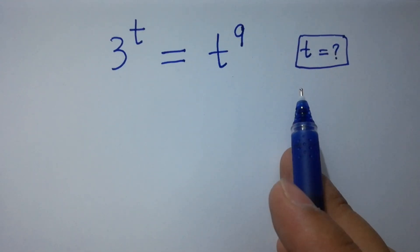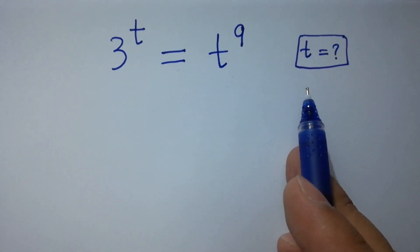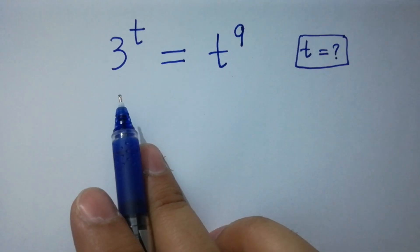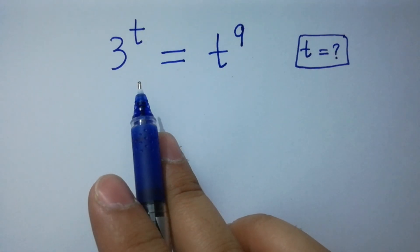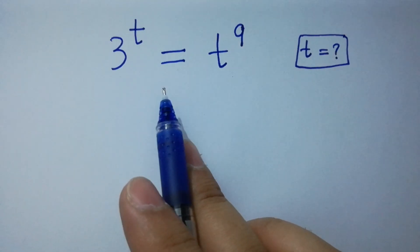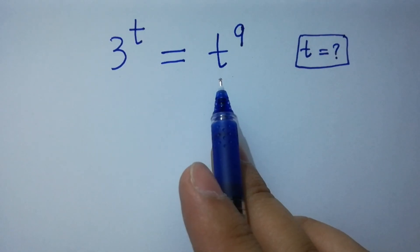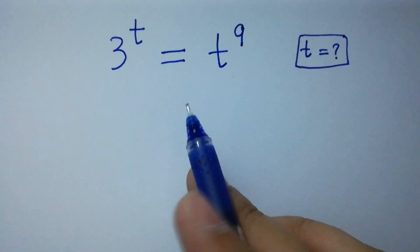Hello friends. Find the value of t if 3 to the power t equals t to the power 9.